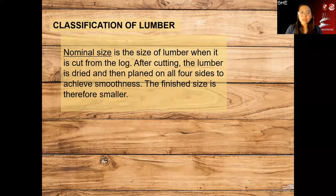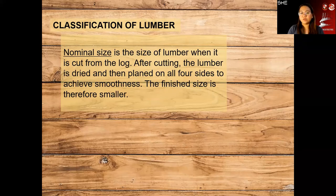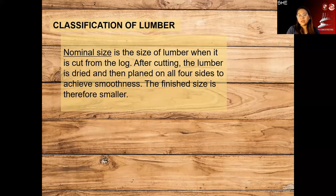We have what's called nominal size — the size of lumber when it is cut from the log. After cutting, the lumber is dried and planed on all four sides. Once it's smoothed, the finish size is reduced because material is removed. When you cut wood, it's not automatically smooth, so it's planed.